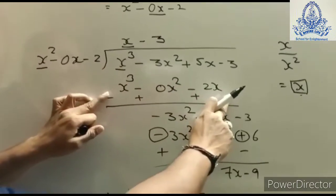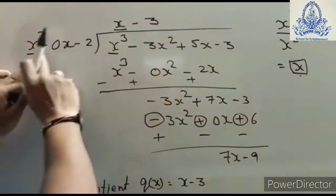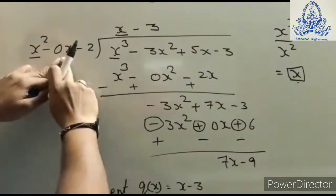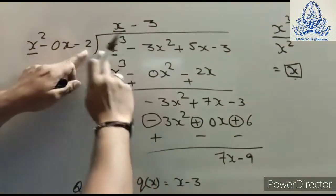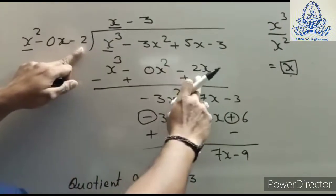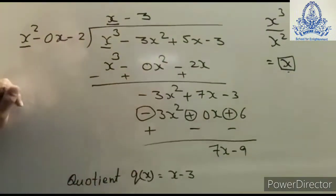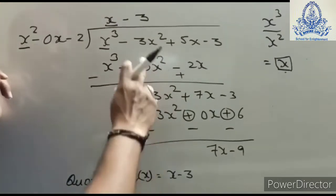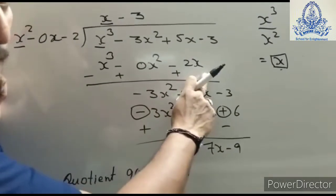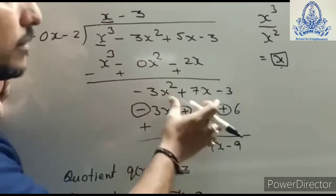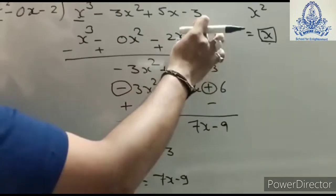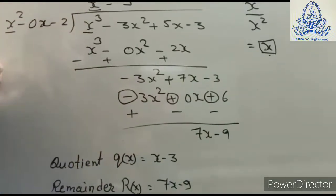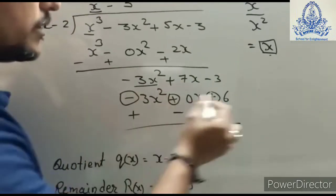Now this x multiplies with all the terms of the divisor and we write the result below. So x × x² = x³, x × 0x = 0x², and x × (−2) = −2x. Then we do the subtraction by changing all the signs of this row.